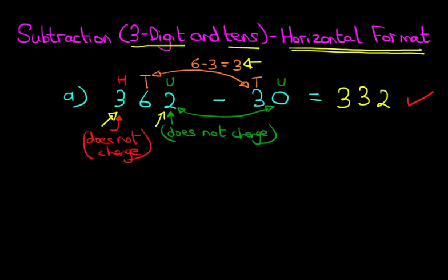So let's have a look at our second example. So this one we have five hundred and twenty seven minus sixty. Now again, and I'll do this bit quickly, the units. Seven minus zero. Therefore, the seven does not change.